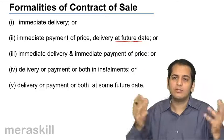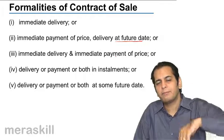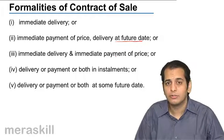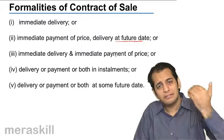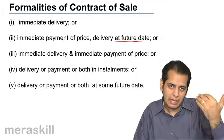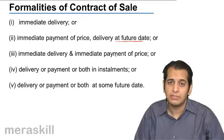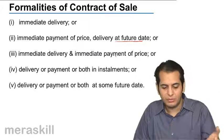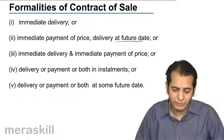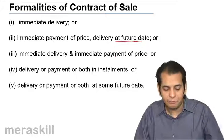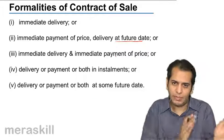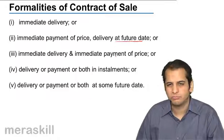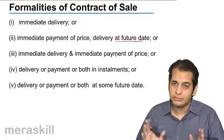Or it can be a case where both are done on a future date — delivery is also on a future date and the price is also paid on a future date. For example, if you do not have money right now and the seller does not have the goods right now, you both agree that delivery will happen when he has goods, and the price will also be paid on a future date when you have the money. So delivery can be immediate or on a future date, payment can be immediate or on a future date, or both can be in installments. These are the formalities of a contract of sale.